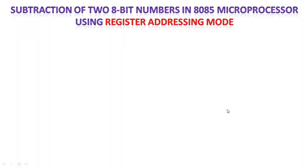Hello everyone. In this video we are going to see subtraction of two 8-bit numbers in 8085 microprocessor using register addressing mode. In register addressing mode, we have to load the two values into two different registers. One of the registers should be the accumulator, and finally we will perform the subtraction — accumulator minus any other register — and the result will be saved back into the accumulator.